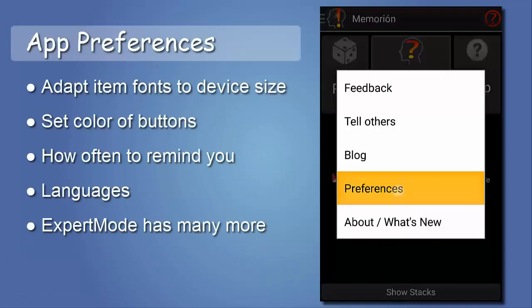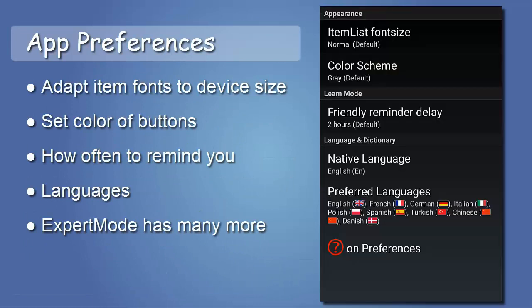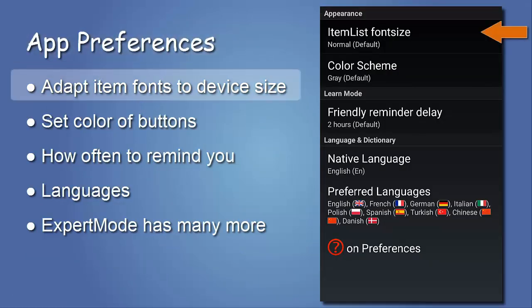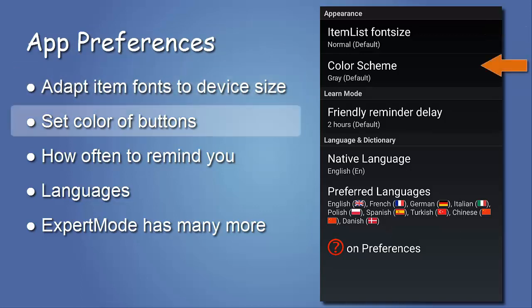Preferences are program-wide, not per stack. As a beginner, you can change a few settings — for example, change the font size within the lists to make it suitable for your device, or set the general color scheme of the program.